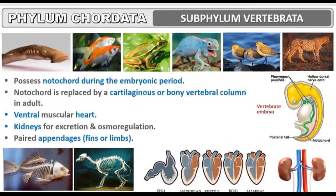Now we have sub-phylum Vertebrata. In this sub-phylum, we are going to study all the vertebrates. Vertebrates have a skeleton present, which may be a bony skeleton or a cartilaginous skeleton — the skeleton can be made of bones or cartilage. Cephalochordata and Urochordata are different from Vertebrata. In vertebrates, the notochord is present during the embryonic period.